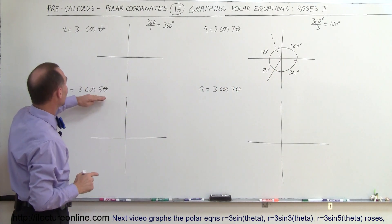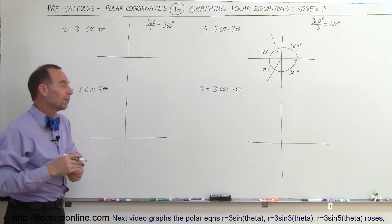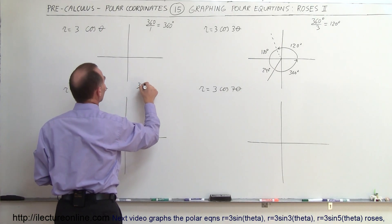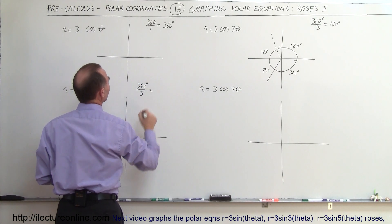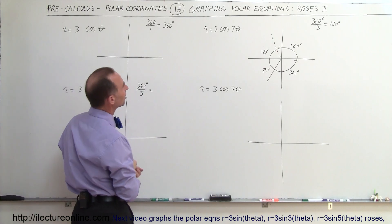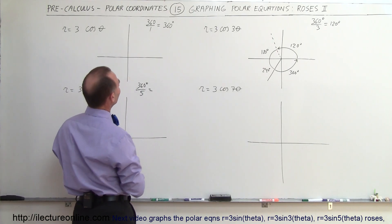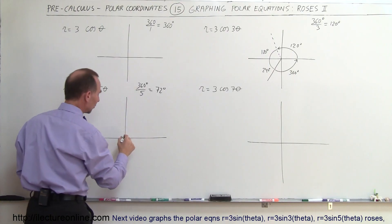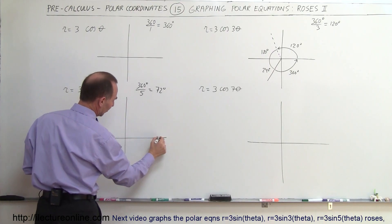For the 5-leaf graph, we'll have 5 leaves every 360 divided by 5. What is 360 degrees divided by 5? That's 72 degrees. So every 72 degrees we'll have a leaf, with the first one at 0.